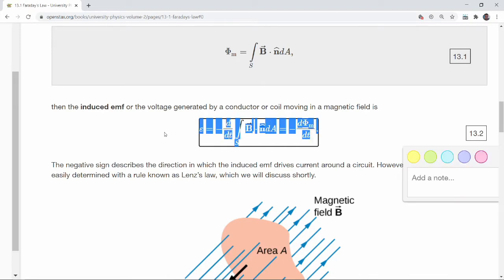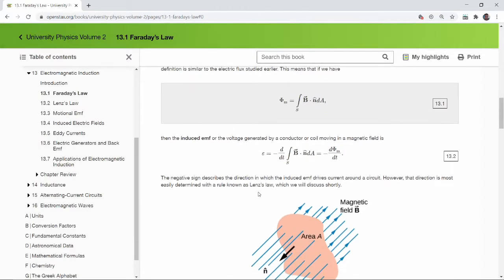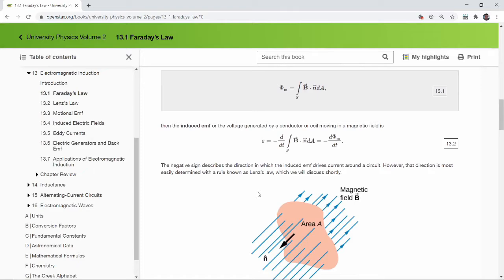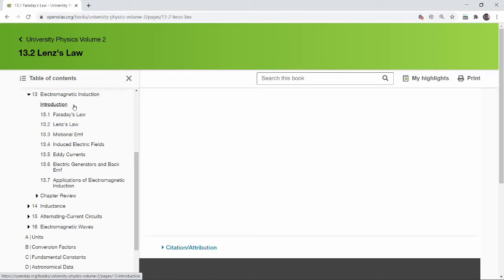Now, this negative sign in Faraday's law is given its own special name. We call it Lenz's law, which is a statement that helps you get that negative sign correct as you try to figure out the direction of induced current. So section 13.2 Lenz's law covers that.